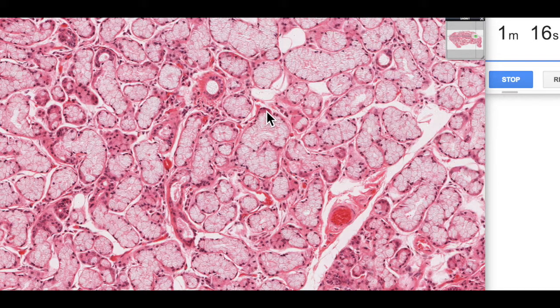So we tend not to have serous acini in the sublingual salivary gland. If serous cells exist, they exist as these serous demilunes. You can see some over here and some other ones over here.